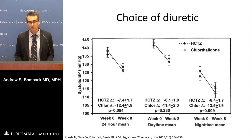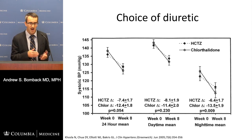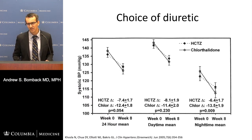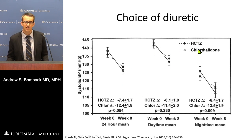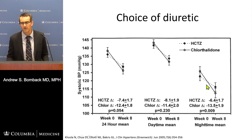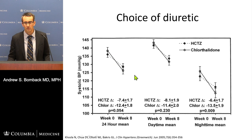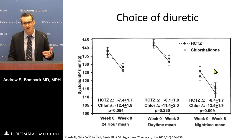Choice of diuretic matters. Chlorthalidone, a more powerful medicine than hydrochlorothiazide due to pharmacokinetics, provides more sustained blood pressure lowering. At equal morning doses, the daytime drop is similar, but chlorthalidone continues its effect overnight whereas hydrochlorothiazide, if not dosed twice daily, loses effect at night — translating to worse 24-hour control. Maintaining nighttime blood pressure dipping is critical for reducing cardiovascular events. So if diuretics seem too weak, it may be that you're choosing the wrong diuretic or dosing it too low.